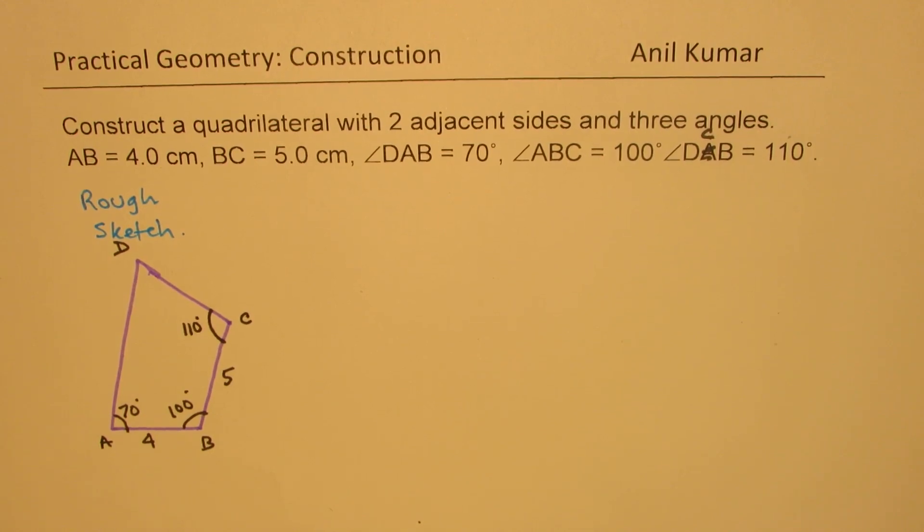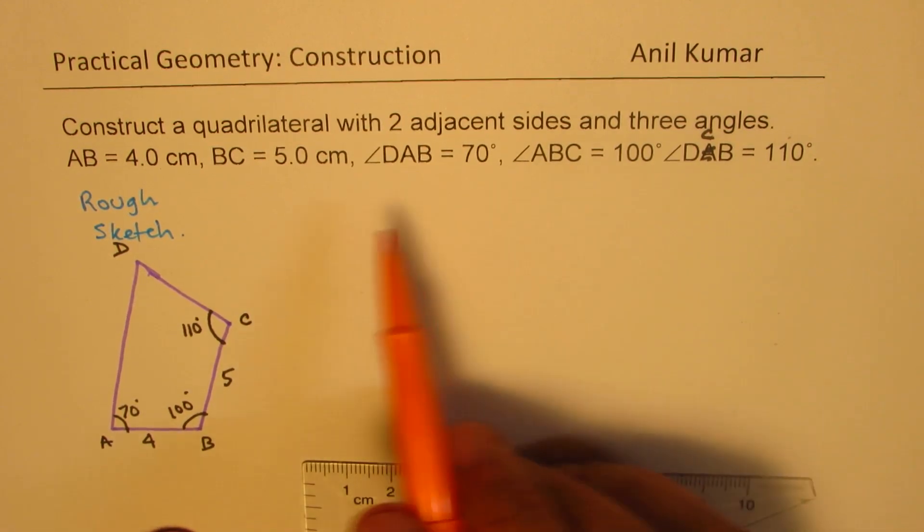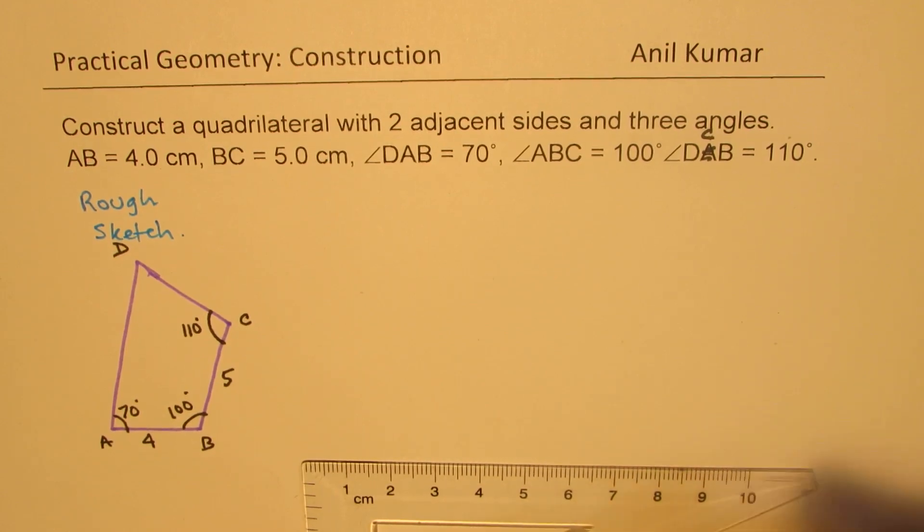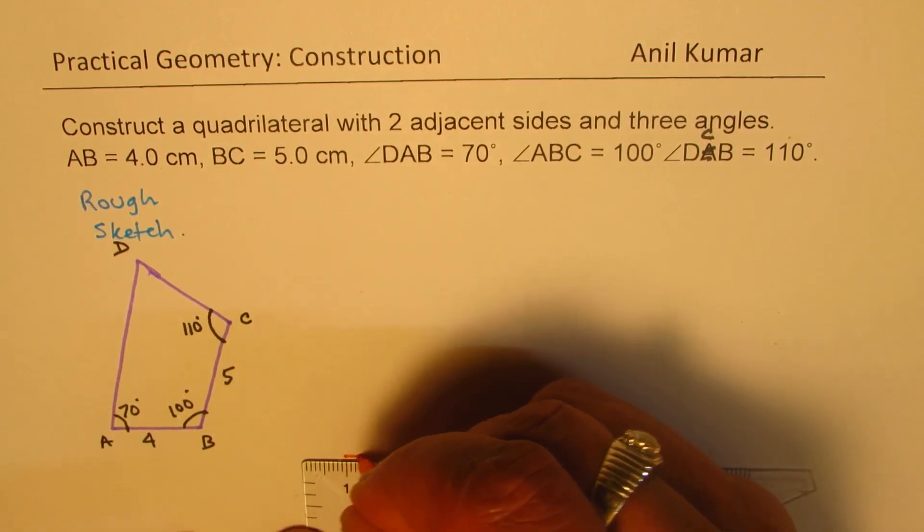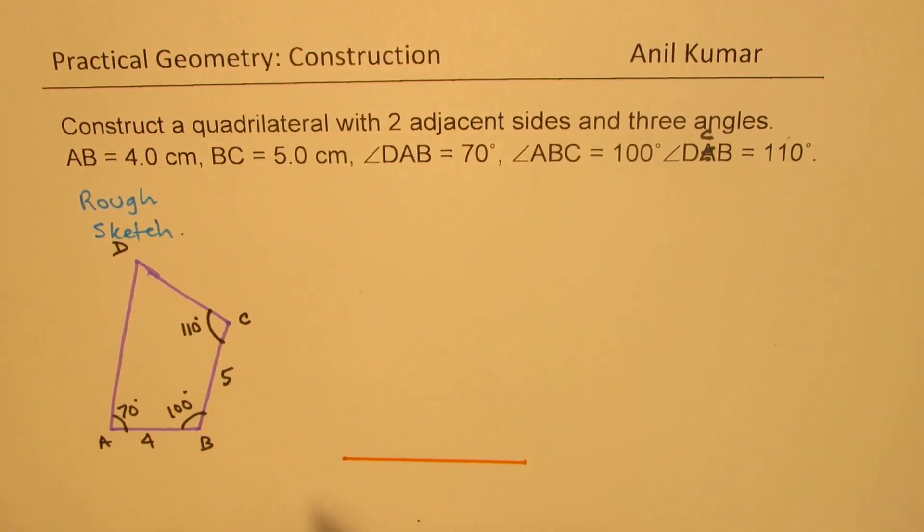So the first line which I'm going to draw this time, right at the bottom, will be my line AB. AB is 4 centimeters. So we'll sketch this 4 centimeters, which is from one to five. So we have A here, 4 centimeters, and that is B.